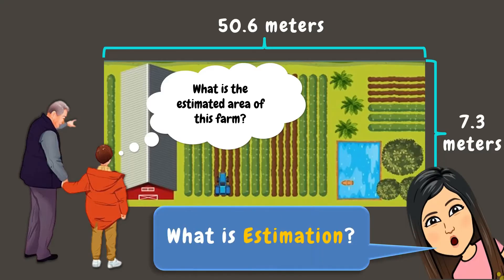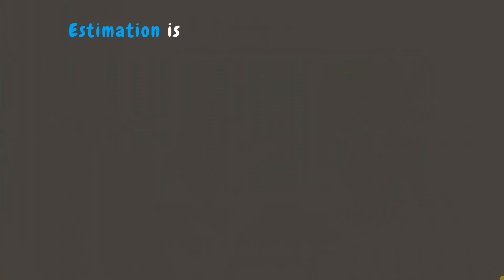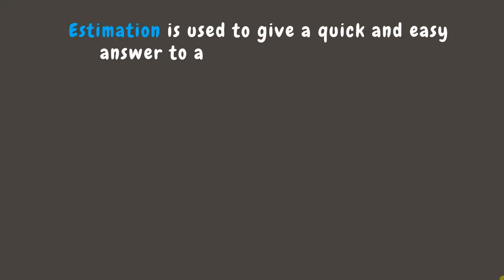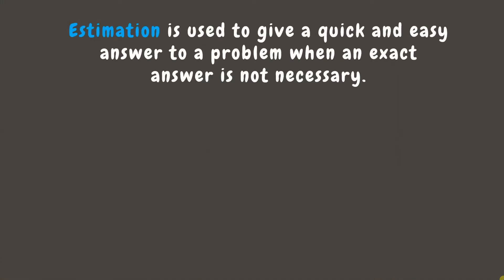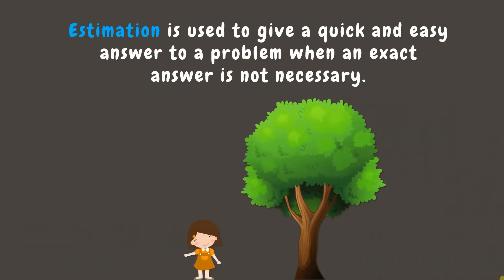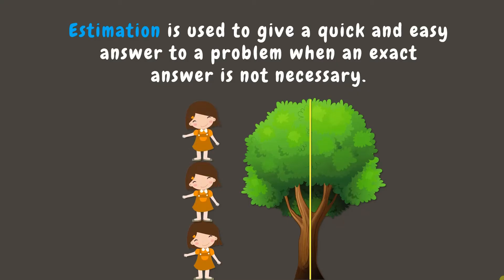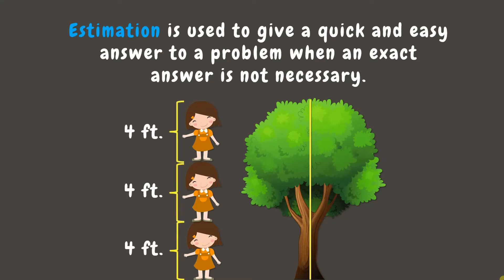Do you know what estimation means? Estimation is a way to quickly solve a problem when an exact answer isn't necessary. For instance, if a girl wants to estimate the height of a tree, she might think it's 3 times her height. If she's 4 feet tall, she estimates the tree to be 12 feet tall.